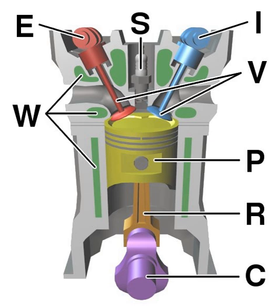The term internal combustion engine usually refers to an engine in which combustion is intermittent, such as the more familiar four-stroke and two-stroke piston engines, along with variants, such as the six-stroke piston engine and the Wankel rotary engine. A second class of internal combustion engines use continuous combustion: gas turbines, jet engines and most rocket engines, each of which are internal combustion engines on the same principle as previously described.